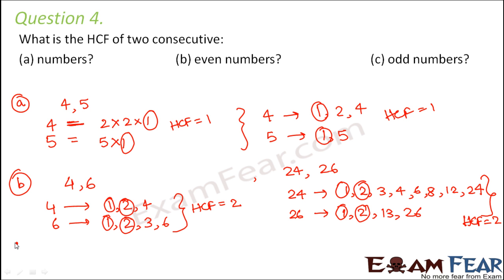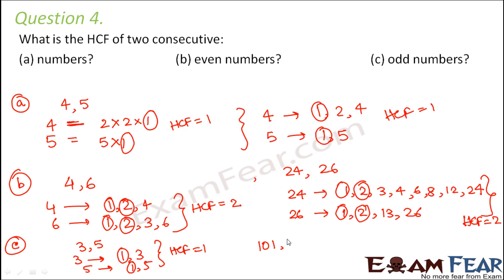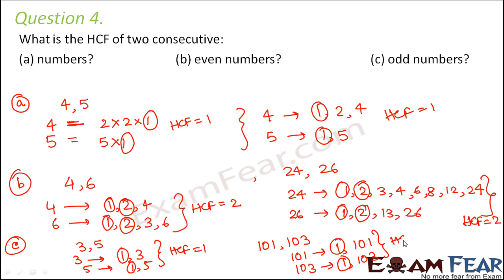Now the third case: two consecutive odd numbers. Consider 3 and 5. Factors of 3 are 1 and 3; factors of 5 are 1 and 5; so the common factor is 1 and the HCF is 1. Similarly for 101 and 103, both prime, their factors are 1 and themselves, so the HCF is again 1. You can try any pair of consecutive odd numbers like 5 and 7, 7 and 9, or 9 and 11 — the HCF will always be 1.